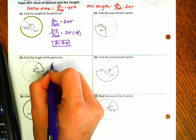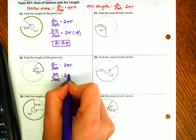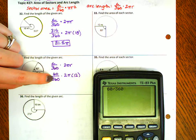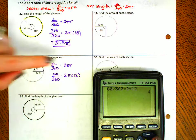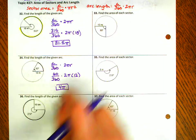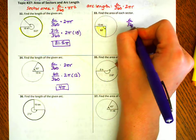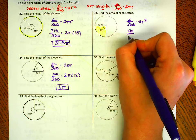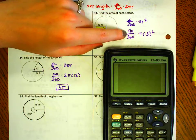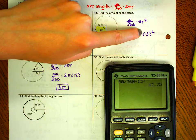For another arc length: angle over 360 times 2πr. With 60 over 360 times 2 times 12 — skipping the pi — I get 4, so the answer is 4π. You can do number 36 by yourself. Number 33 says find the sector area. My central angle is 90 and my radius is 13. Typing in 90 over 360 times 13 squared — leaving out the pi — gives 42.25. So the sector area is 42.25π.